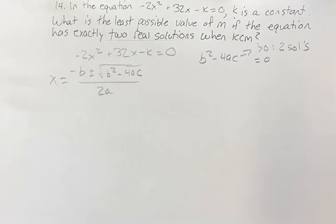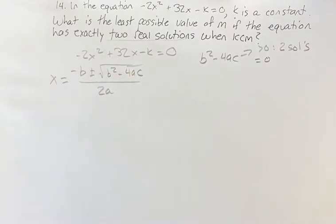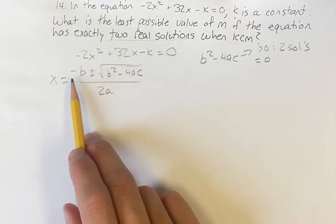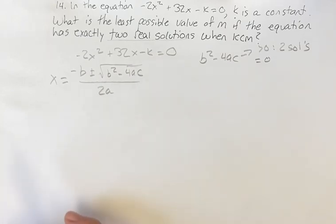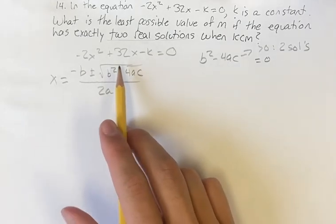If it's equal to 0, then the square root is equal to 0, and then you're doing negative b plus 0, negative b minus 0. Both situations, it's just negative b, so there's only going to be one solution.